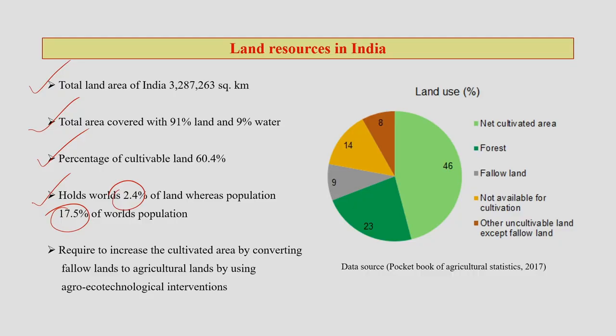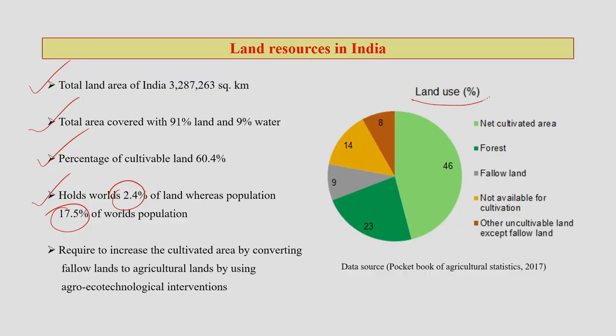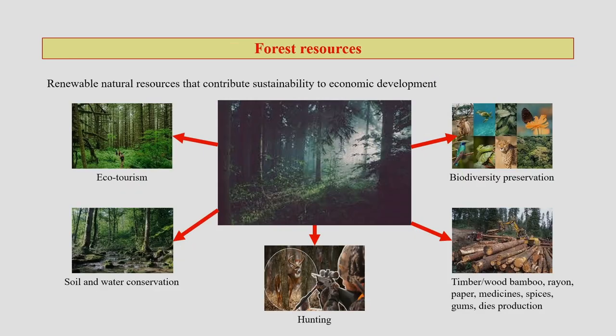New innovations should come up in the field of agro-technology and agro-eco-technology. Any technology for land use management, agriculture, or forest must keep the environment in mind — that is why an agro-eco-technological approach is important. Looking at the percentage of land use: net cultivated area is around 46 percent, forest has increased a little, fallow land is around 9 percent, land not available for cultivation is around 14 percent, and other cultivable land is around 8 percent.